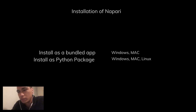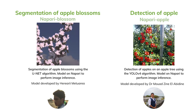Its installation is simple. It comes in two forms: software and Python library. The software form is only available on Windows and Mac. The plugin, especially Napari Apple, is only available on Linux. So we will install Napari as a Python package. The Python package is available on Windows, Linux, and Mac, and the installation process is similar across all three operating systems.